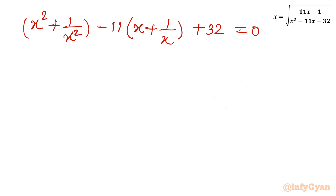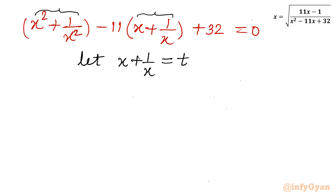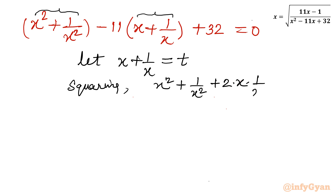A substitution is required. Let x plus 1 over x equal t. To find x squared plus 1 over x squared, we square both sides: x squared plus 1 over x squared plus 2 times x times 1 over x equals t squared. So x squared plus 1 over x squared equals t squared minus 2.